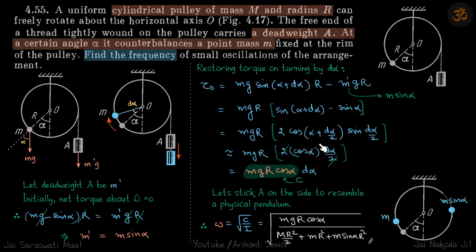So (alpha plus d alpha)/2 can be assumed to be simply alpha, giving cos alpha. And sin(d alpha/2) we can write as d alpha/2. This simplifies to mg r cos alpha d alpha.